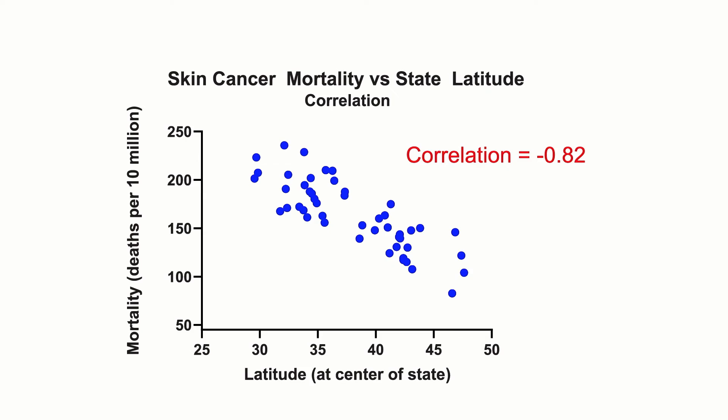The correlation between latitude and mortality rate is negative .82, indicating a strong negative relationship between the two variables. As one increases, there is a strong tendency for the other to decrease.